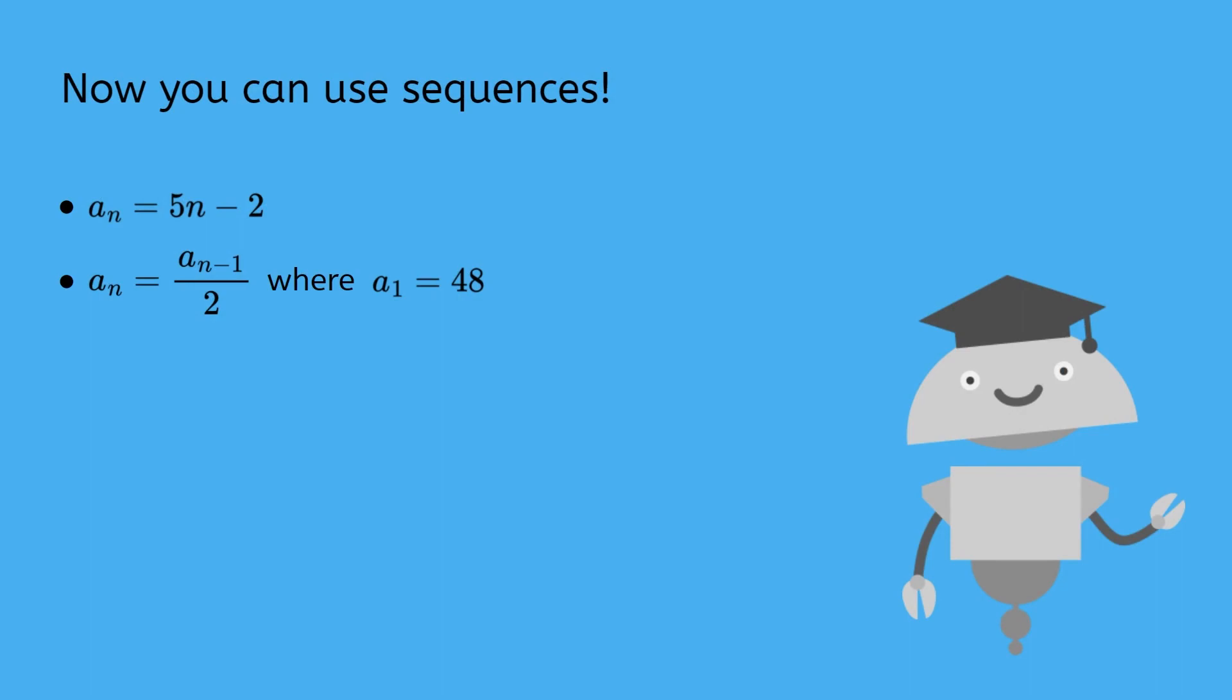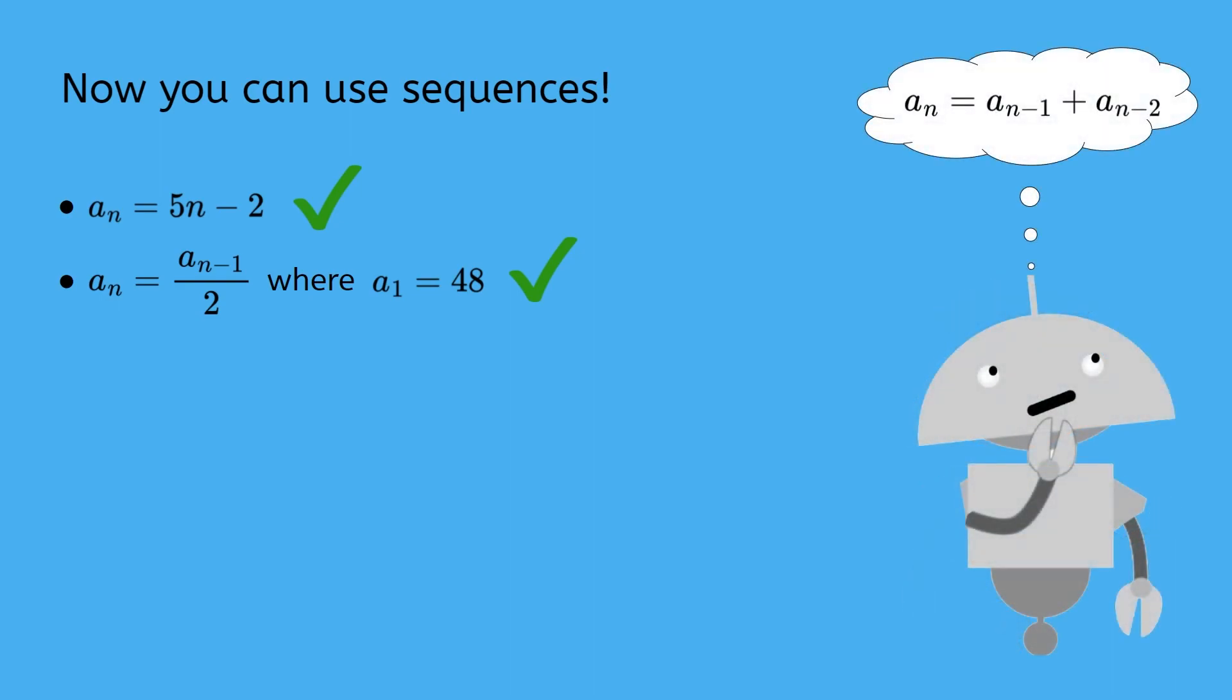Now you can use sequences. Remember that the formula with numbers and the variable n lets you find any term, even if you don't know the term before it. The formula with a previous term requires that you go one step at a time. Next time, we'll study the Fibonacci sequence, an incredible recursive sequence that appears in nature. See you then!